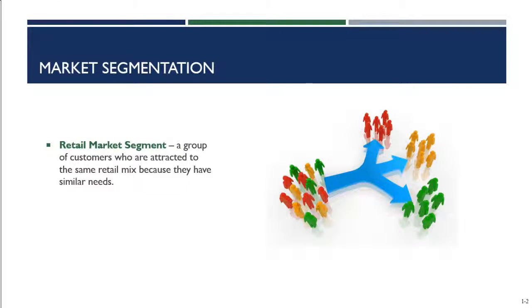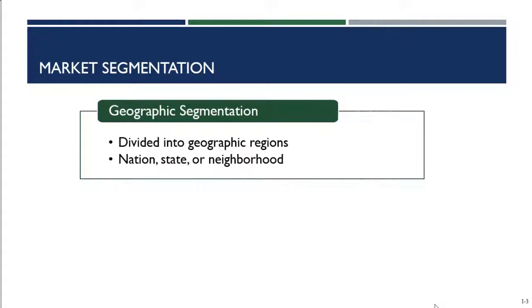There's a wide variety of approaches that retailers use to segment markets. The first is geographic segmentation. Potential consumers can be divided into geographic regions by nation, state, or neighborhood.